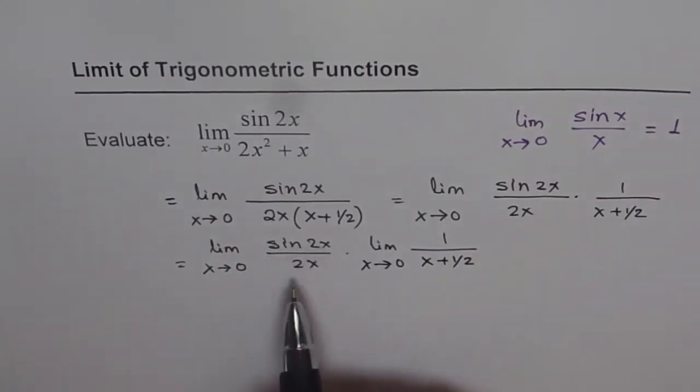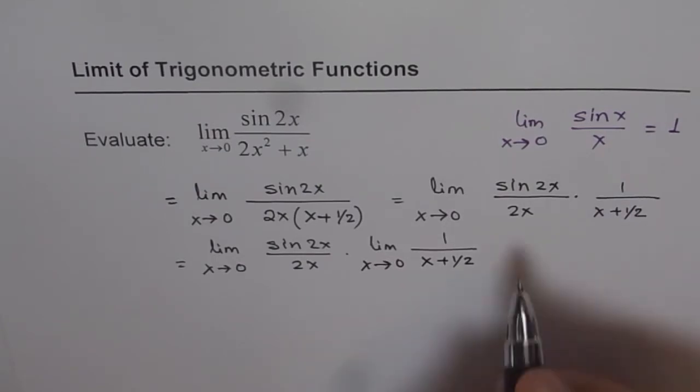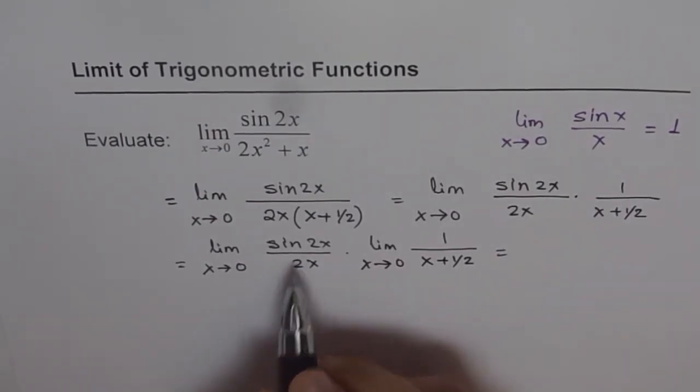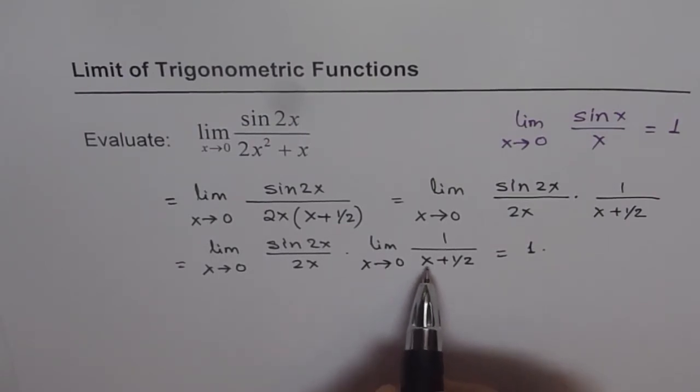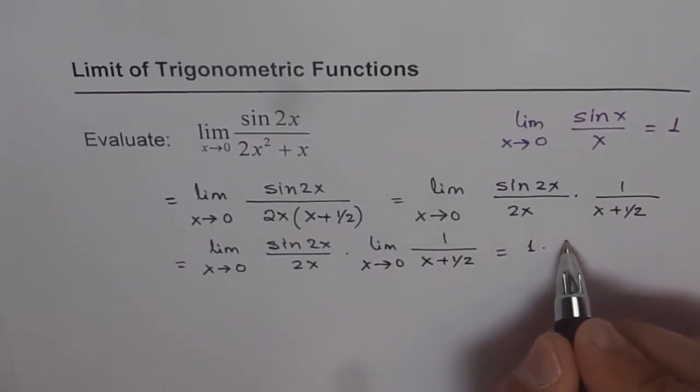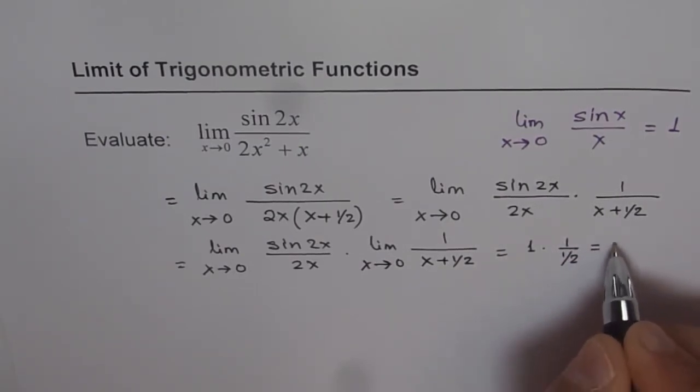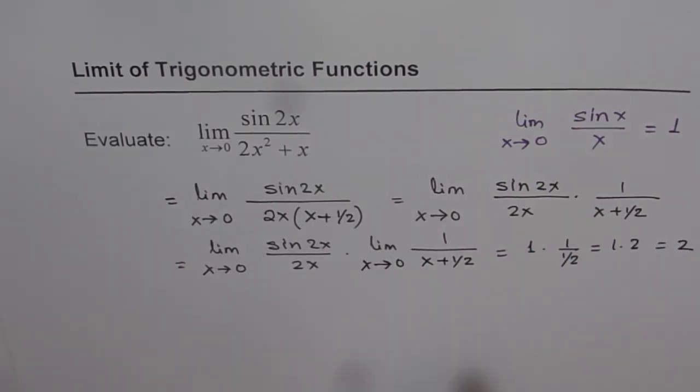Now sin(2x) over 2x as x approaches 0 is 1, so we can write this as 1 for the first part. For the second part, if you substitute 0, you get 1 over 1/2, which equals 1 times 2, or 2. Therefore our answer is that the limit